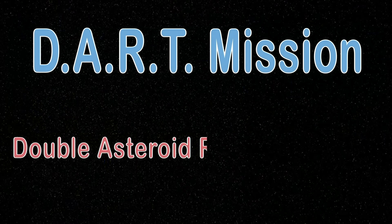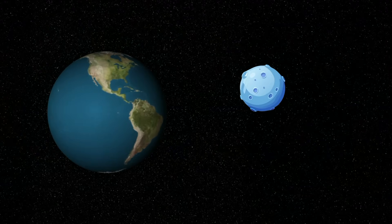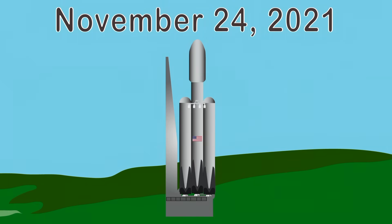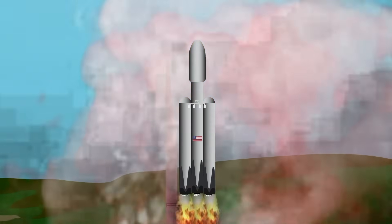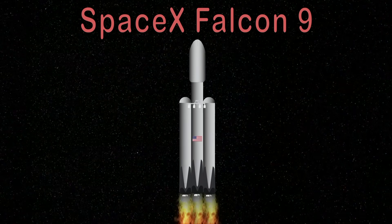The DART mission means Double Asteroid Redirection Test, used to alter the orbit of an asteroid that threatens Earth. On November 24th, 2021, the SpaceX Falcon 9 rocket was used to get the job done.